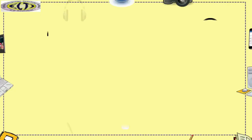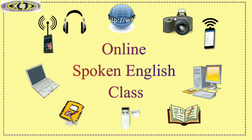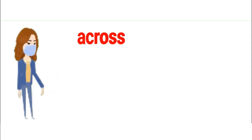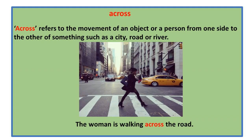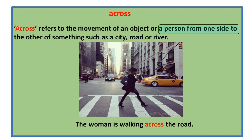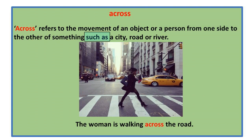Hello everyone, welcome back to the online spoken English class. In this module we shall learn about the usage of the prepositions 'across' and 'through'. Let's understand the usage of the preposition 'across'. The preposition 'across' refers to the movement of an object or a person from one side to the other of something, such as a city, road, or river.